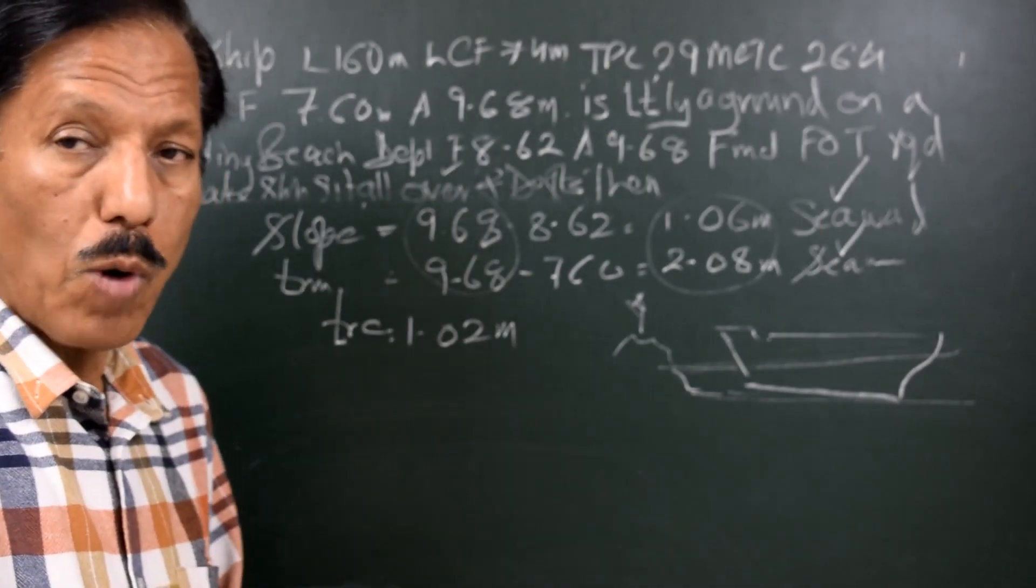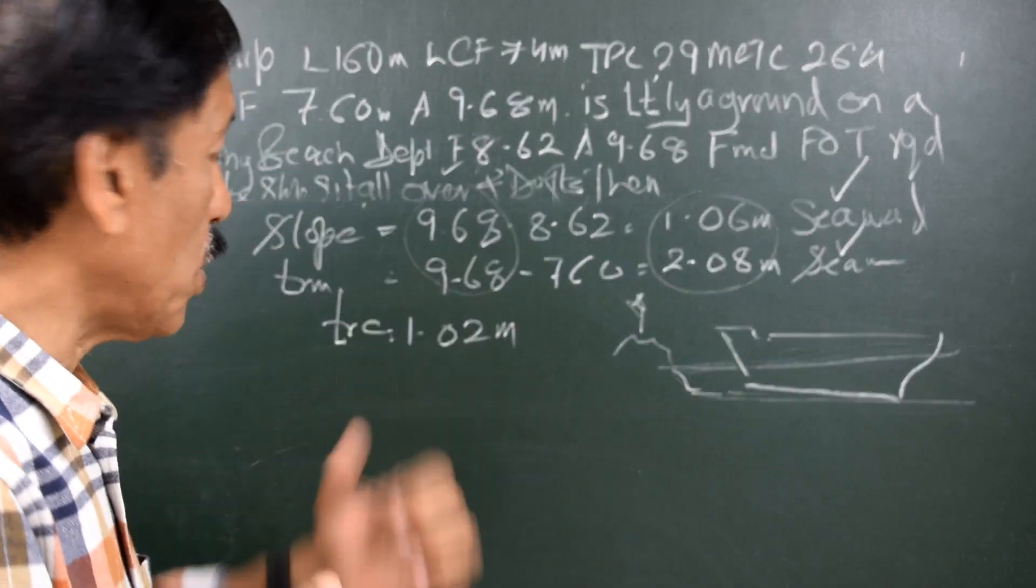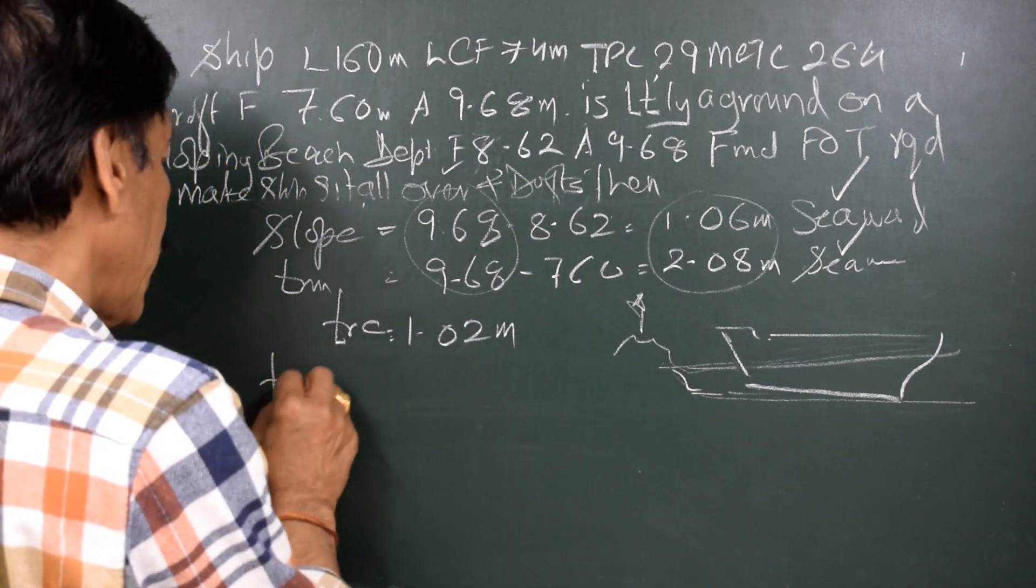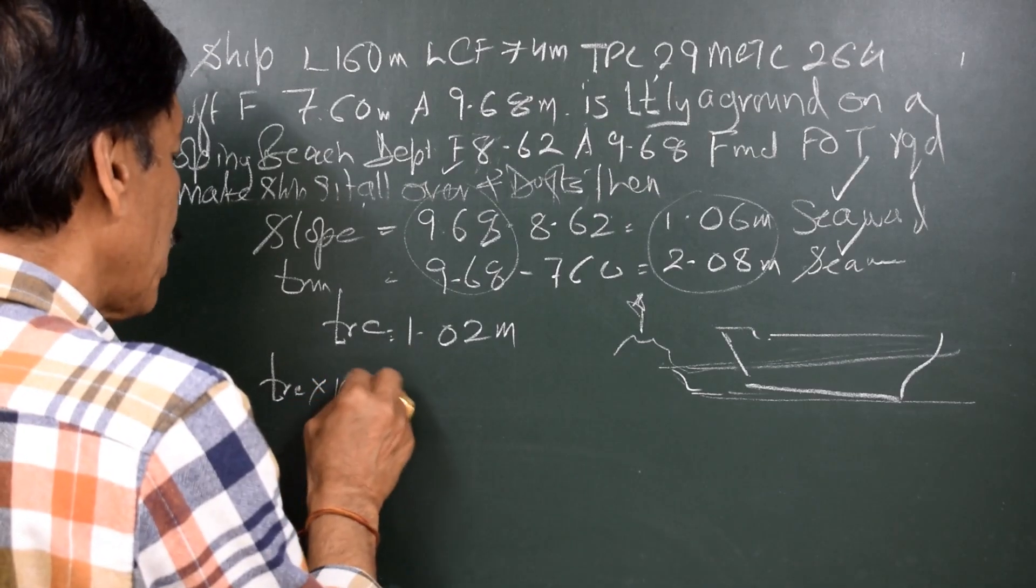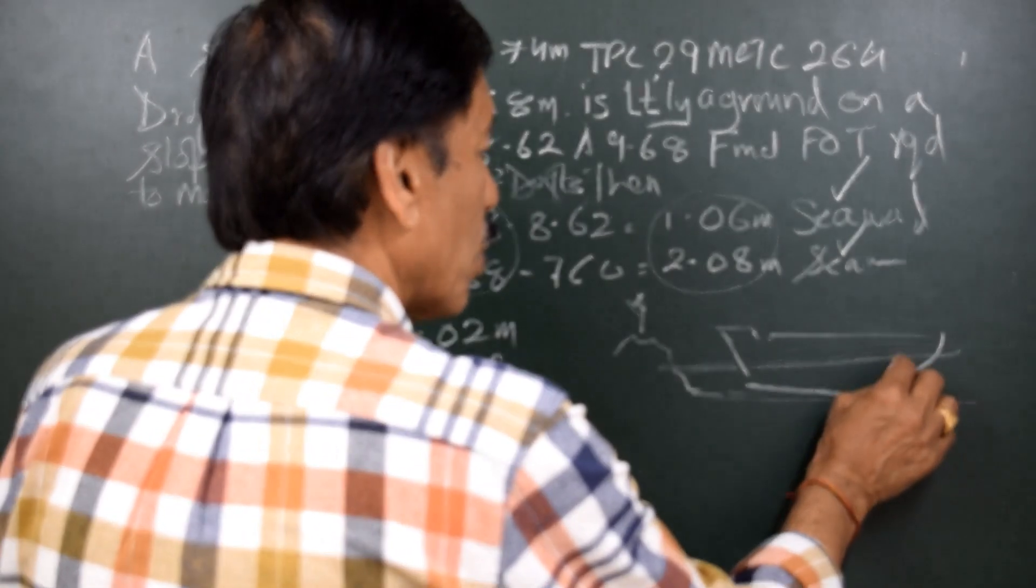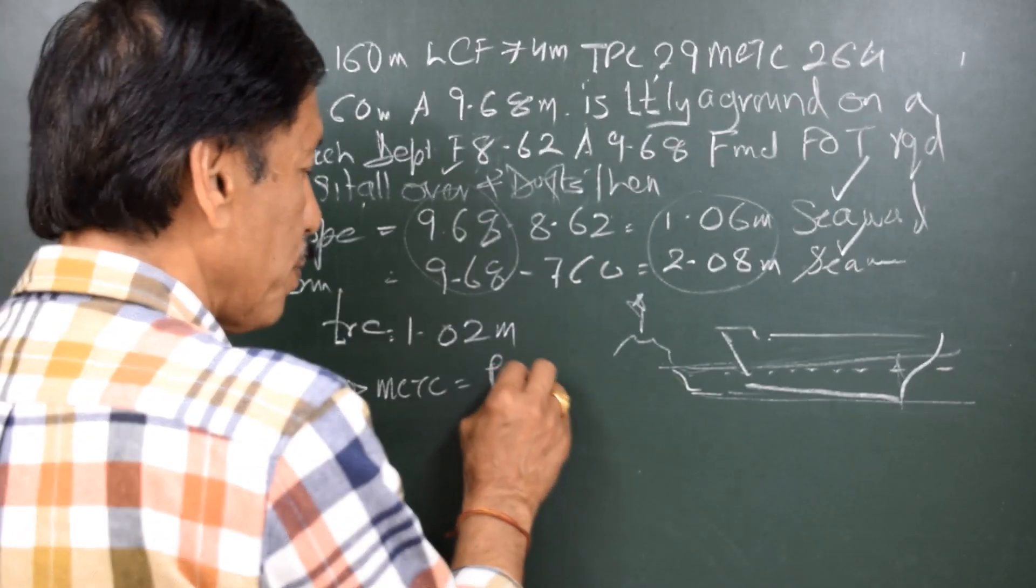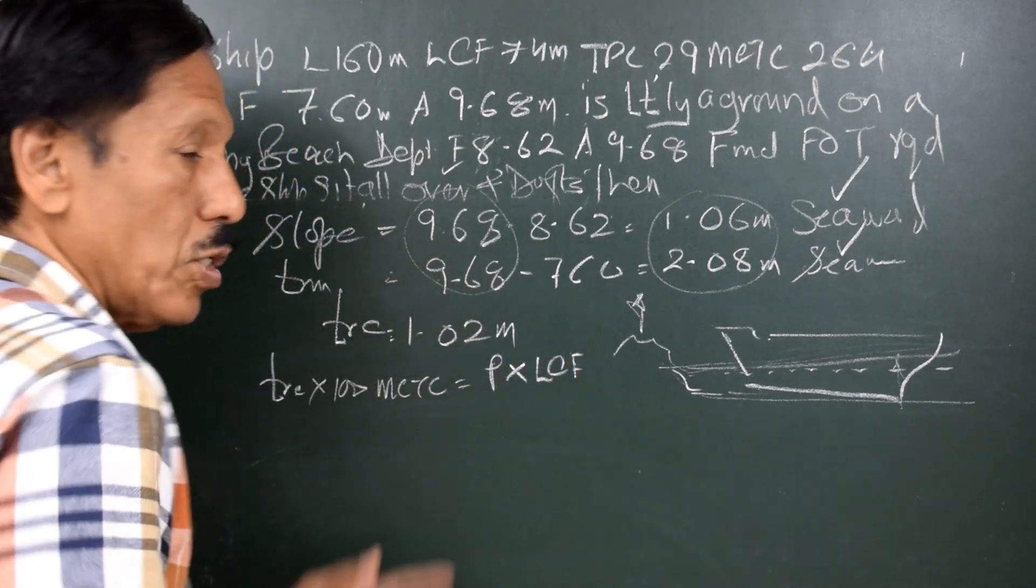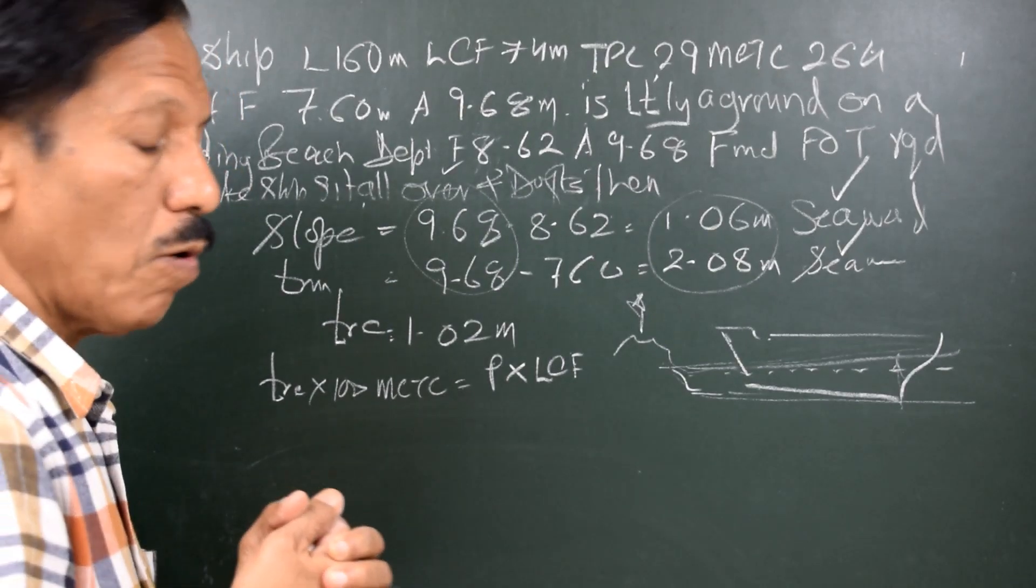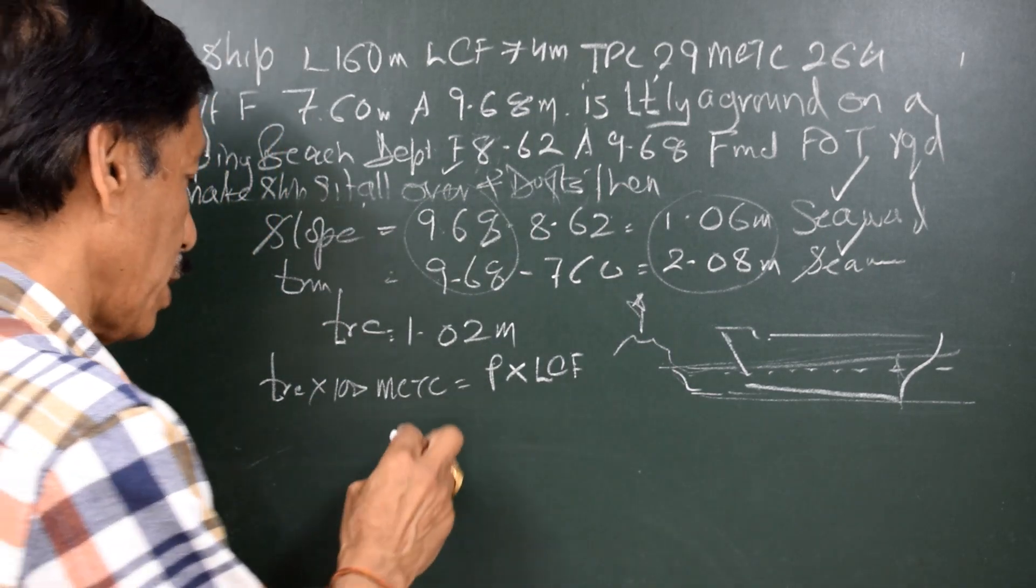So what is the fall of tide required to do this? I want to know what is the fall of tide that will cause trim change equal to 1.02 meters. We have the usual formula: trim change into 100 MCTC is equal to P. Now the upthrust will cause at this point with the fall of water level, so P into LCF. So if we substitute the values in this formula, we will find out what is the value of P that will cause a trim change of 1.02 meters.